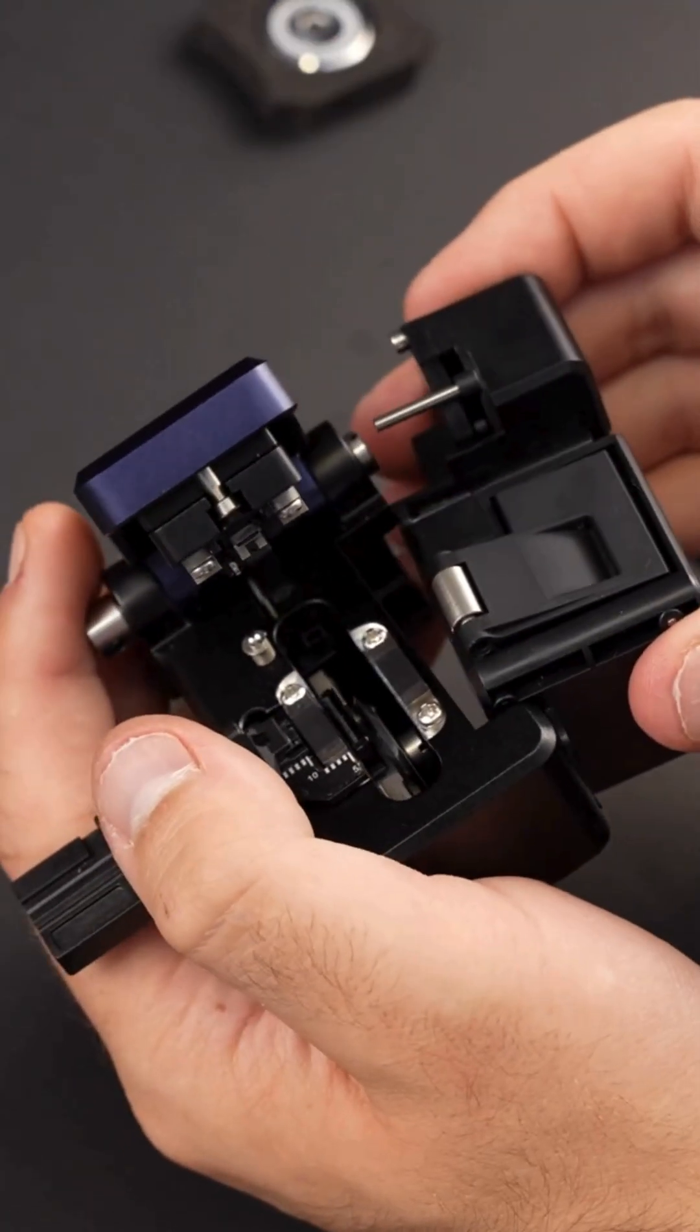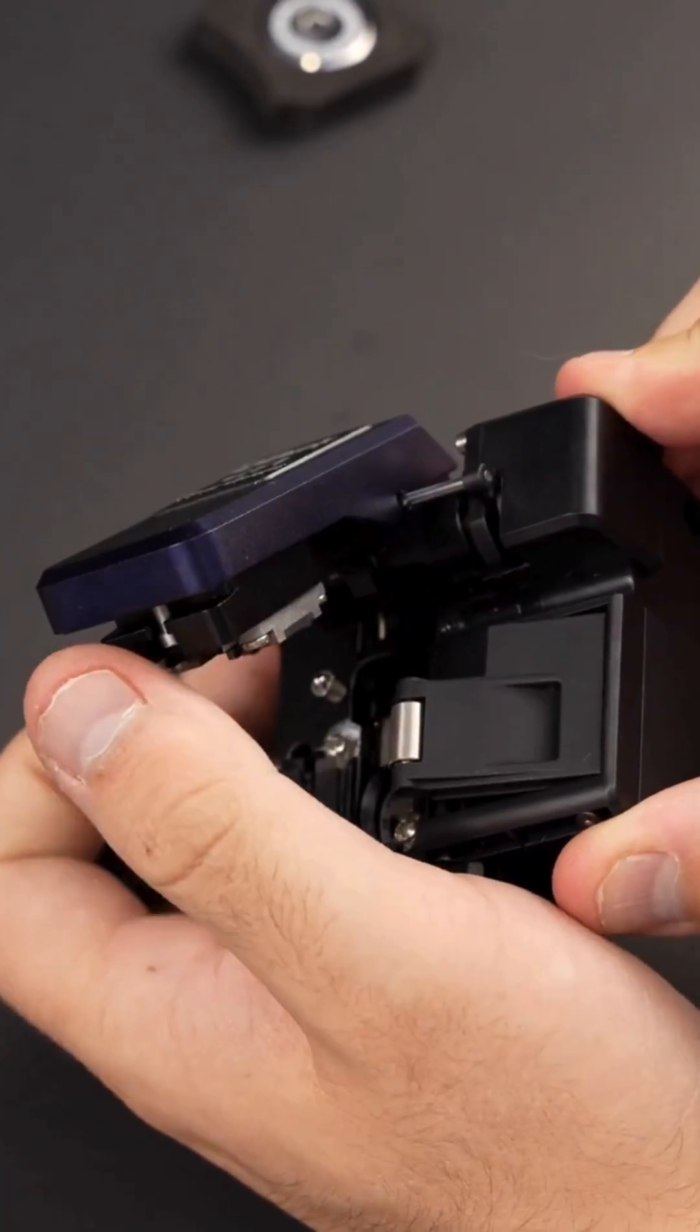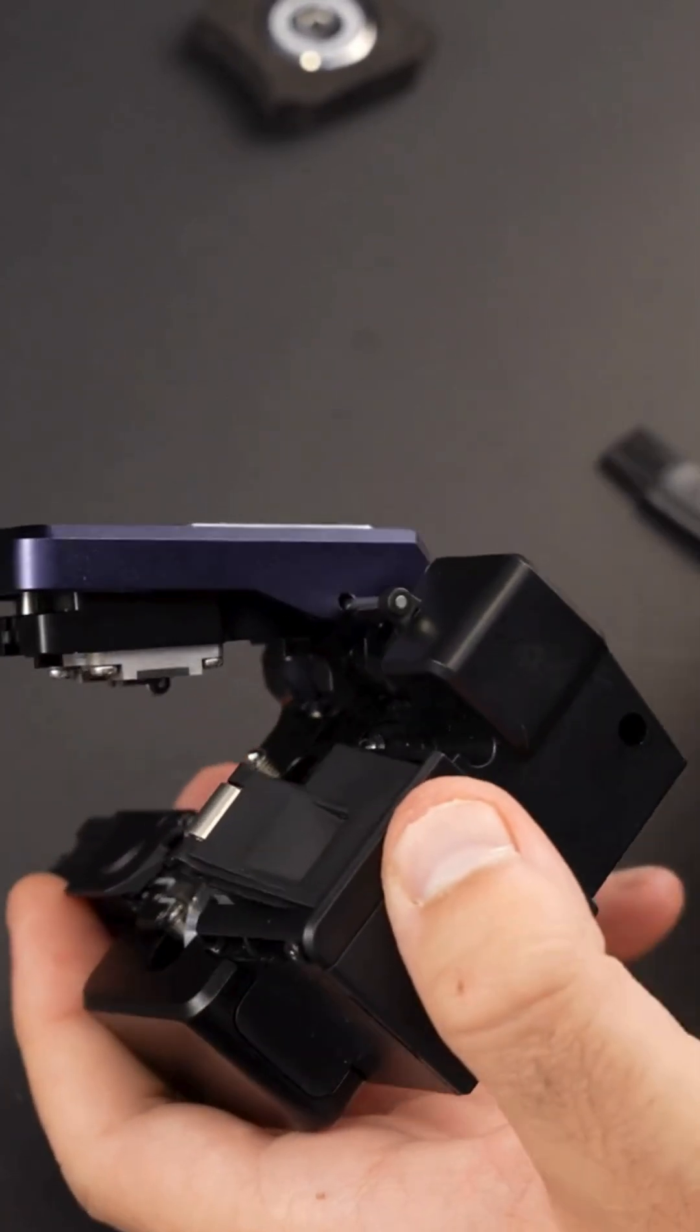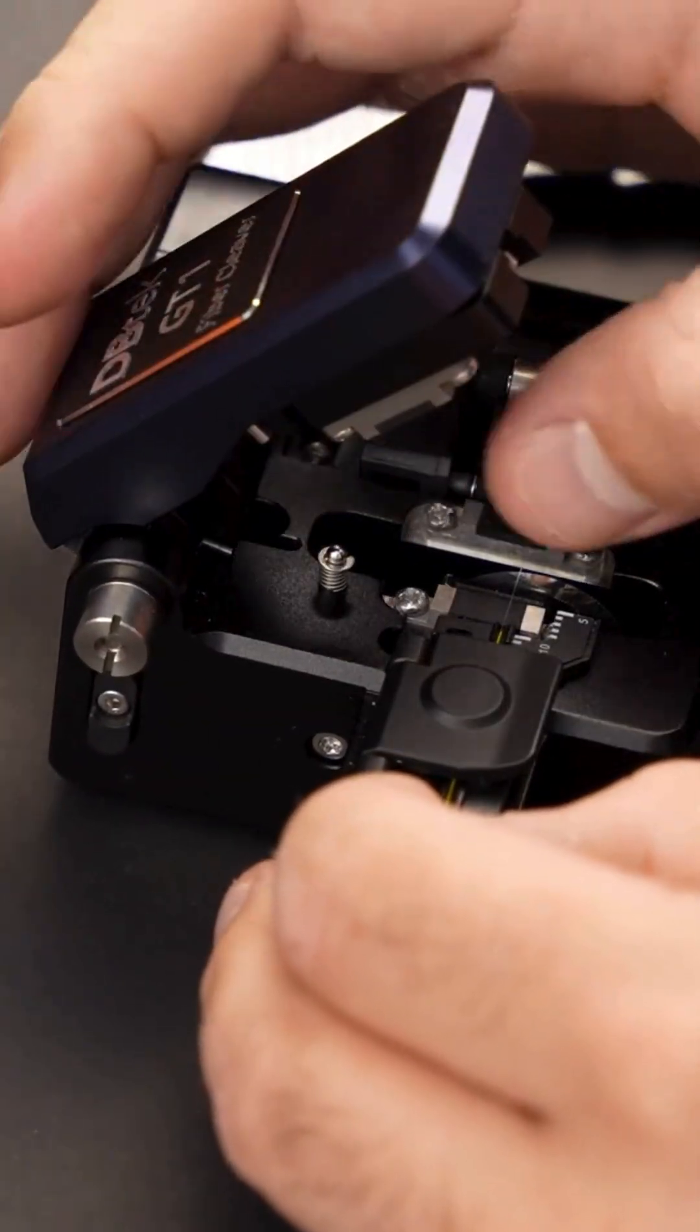Reassemble the cleaver by aligning the fiber bin with the base unit. Make sure all parts fit properly before reattaching the screws.